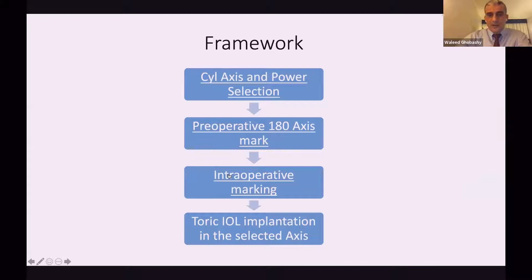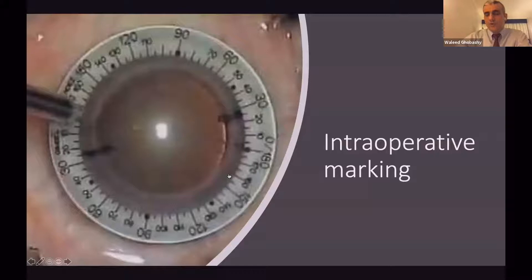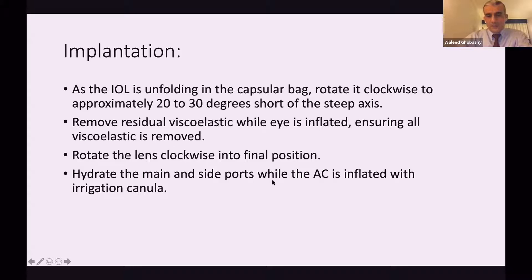The third step is intraoperative marking. You can do it before starting the surgery or after removing the cataract, then mark the intended axis — here at 30 degrees. Then you go to lens implantation. As the IOL is unfolding and the capsule is on the back, it's better to rotate it clockwise 20 to 30 degrees short of the steep axis. So if you are targeting 180 degrees, it's better to place it up to 160. Then remove the residual viscoelastic while the eye is still inflated, and after removing the viscoelastic, place the lens at the desired axis. Finally, hydrate the side and main port while the anterior chamber is still inflated with the irrigating cannula.